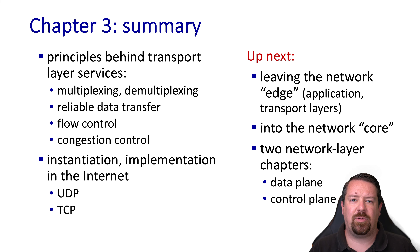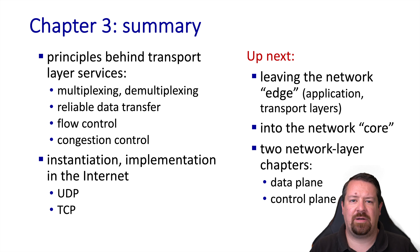This brings us to the end of chapter 3, which has been all about the transport layer. To quickly summarize, we've looked at multiplexing, demultiplexing, reliable data transfer, flow control and congestion control, and the specific ways in which these services are instantiated for internet protocols. Next, we will transition to looking at the network core. The network layer itself is divided into two chapters — first we'll look at the data plane, followed by the control plane.